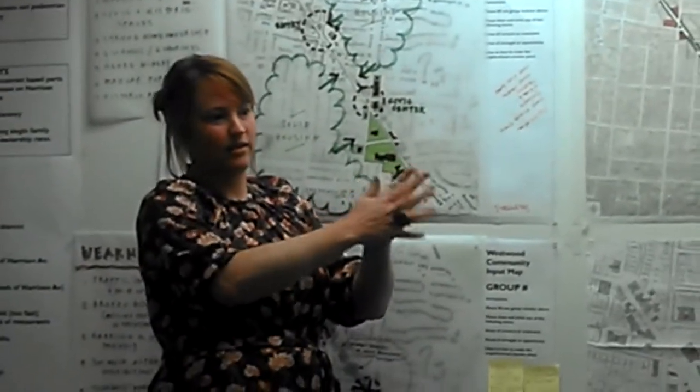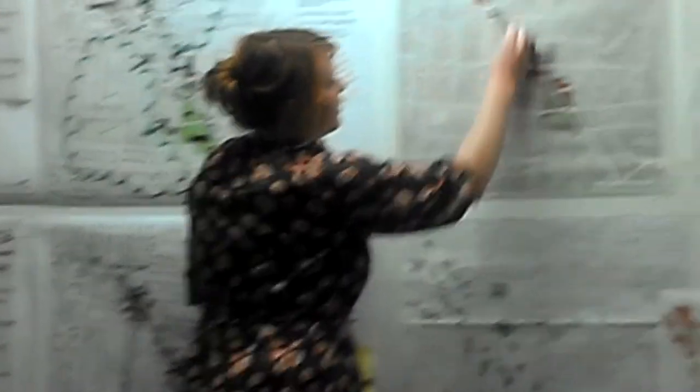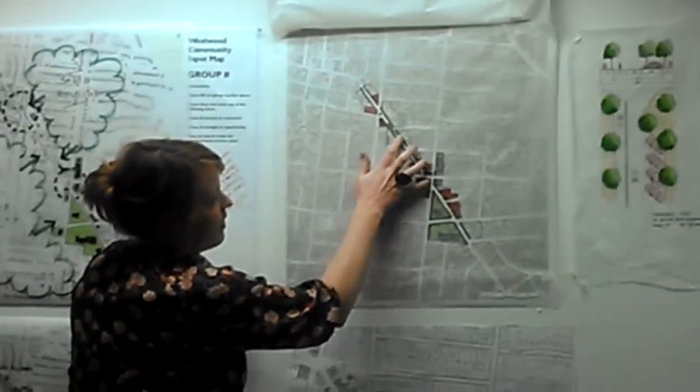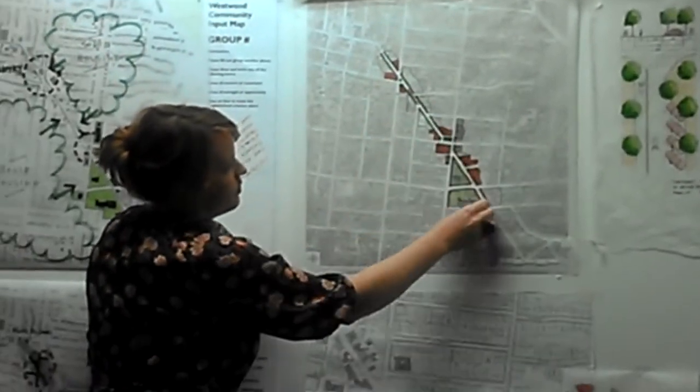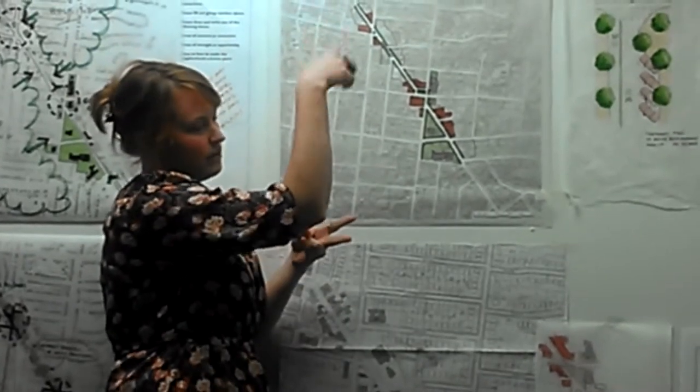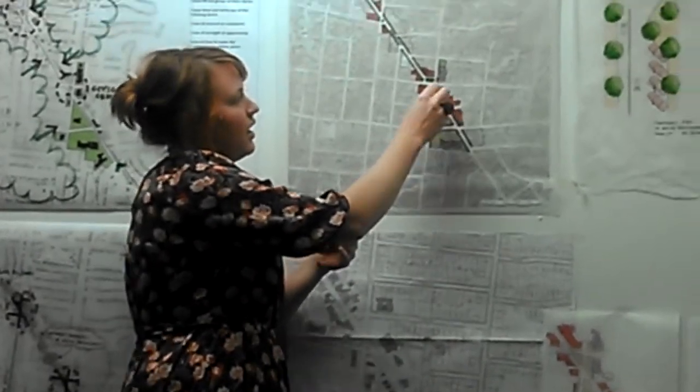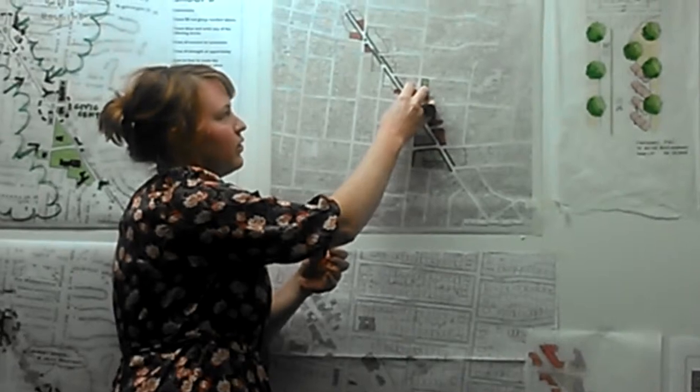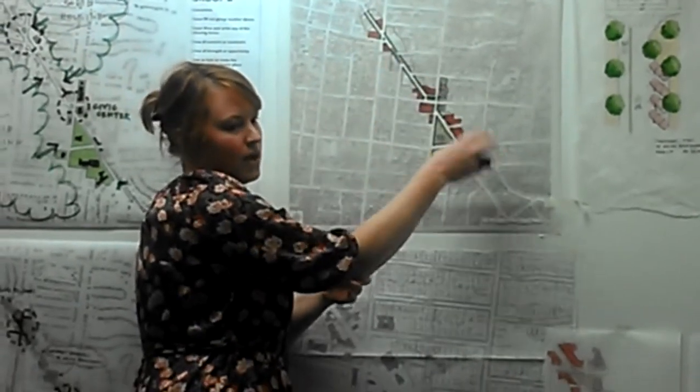But for us, it's also critical in improving the aesthetic of the street itself. There are two ways to improve Harrison: one is to improve the street itself, and then the second is the quality of the buildings on the outside. The second thing that we started to study, this is kind of our outline drawing here.